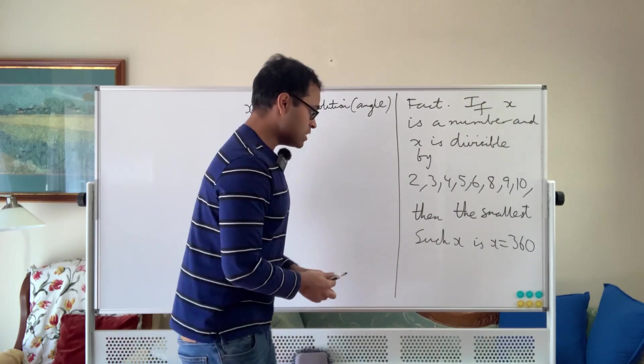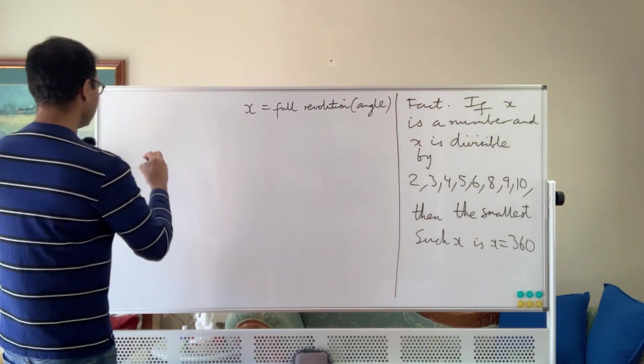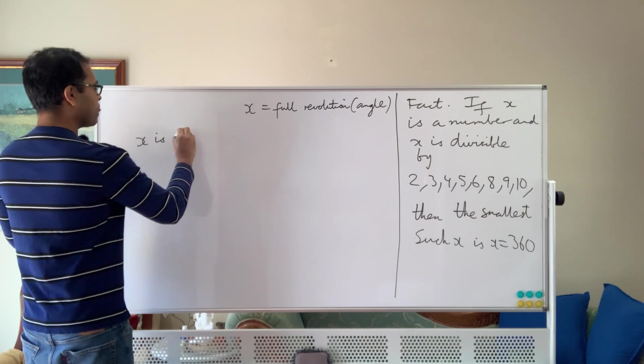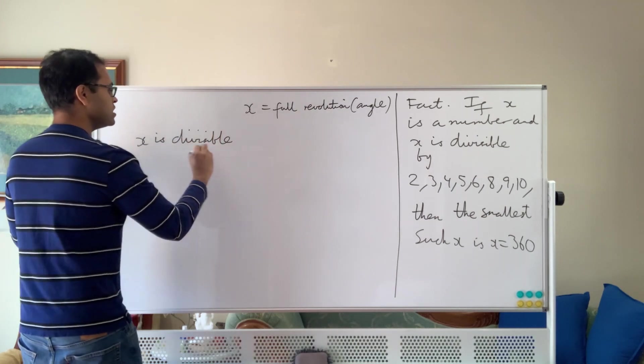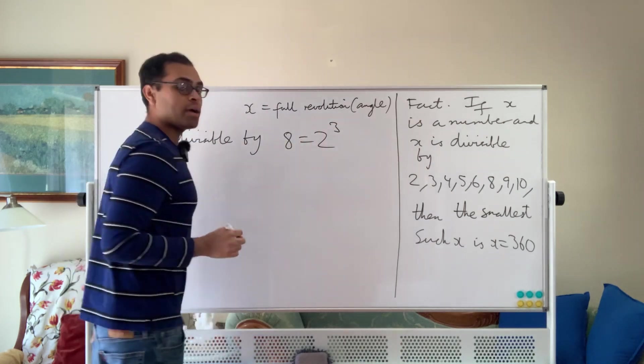So the way we prove this mathematically is the following. Well, we know that if all these numbers go into x, we know that x is divisible by 8. So x is divisible by 8, because 8 is one of the numbers. So x is divisible by 8, which is equal to 2 cubed, right? 2 times 2 times 2.